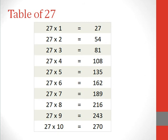Table of 27. 27 1s are 27, 27 2s are 54, 27 3s are 81, 27 4s are 108, 27 5s are 135.